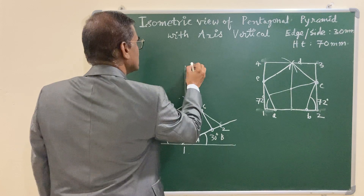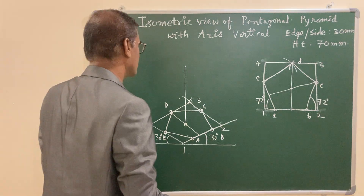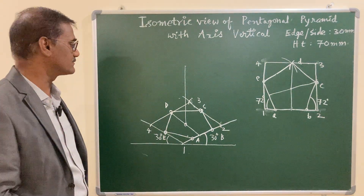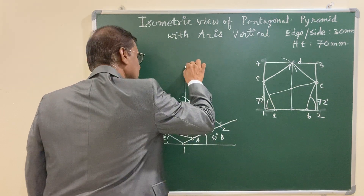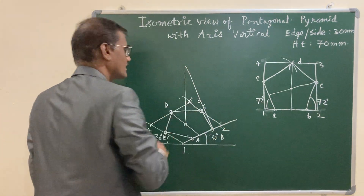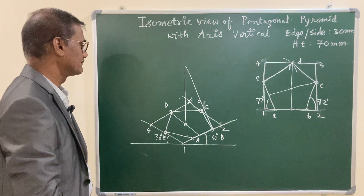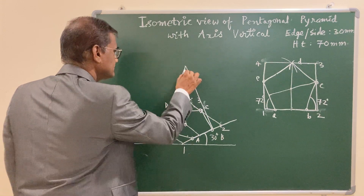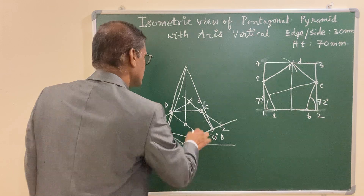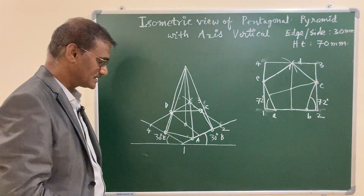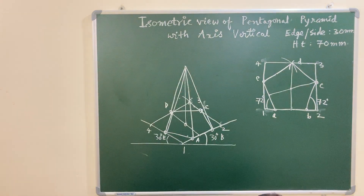Once the apex is located, you must be careful in joining it with the corners of the base. Join with B, then join with C — note that C is inside so you may not need to draw that edge visibly. Join with D, join with E, and join with A.